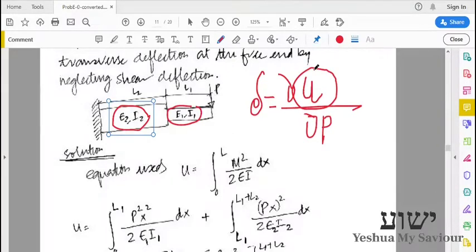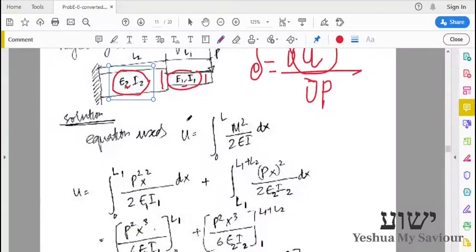To find the strain energy, the equation to be used is U equals integral from 0 to L of M squared by 2EI dx. The problem here is we have two different sections and two different parameters.